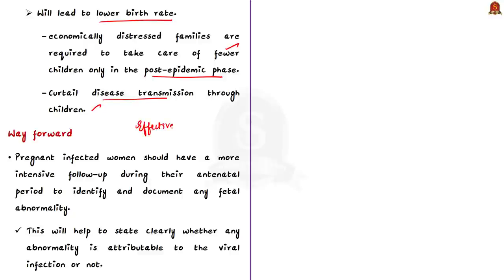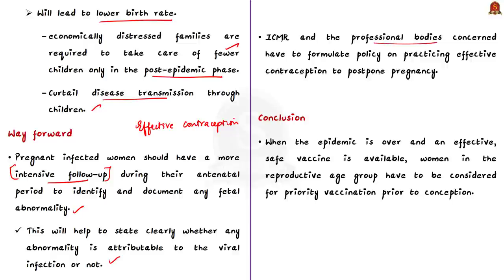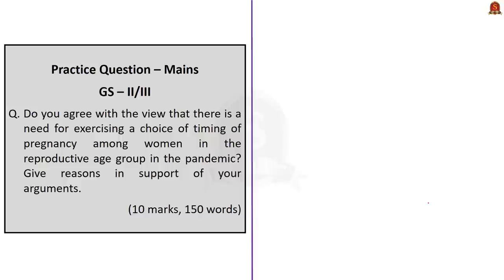The way forward includes: first, pregnant infected women should have more intensive follow-up during the antenatal period so that any fetal abnormality can be identified and documented — this will help clarify whether any abnormality is attributable to viral infection. Second, ICMR and other professional bodies must formulate policies on effective contraception to postpone pregnancies. The authors conclude that when the epidemic is over and an effective vaccine is available, women in the reproductive age group should be considered for priority vaccination prior to conception, which will help ensure safe pregnancy and safe childbirth.